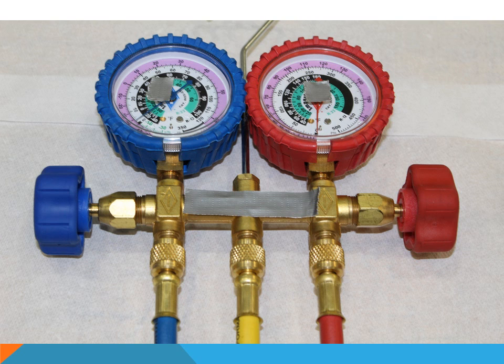These are gauges used in the refrigeration and air conditioning field. They are designed to read pressure, but also the gauge in PSI is calibrated to read the specific temperature of the refrigerant gas based on the type of refrigerant being used — a corresponding pressure matched to that temperature. This is used anytime you need to understand how the system is operating and the refrigerant is flowing through the air conditioning or refrigeration system.